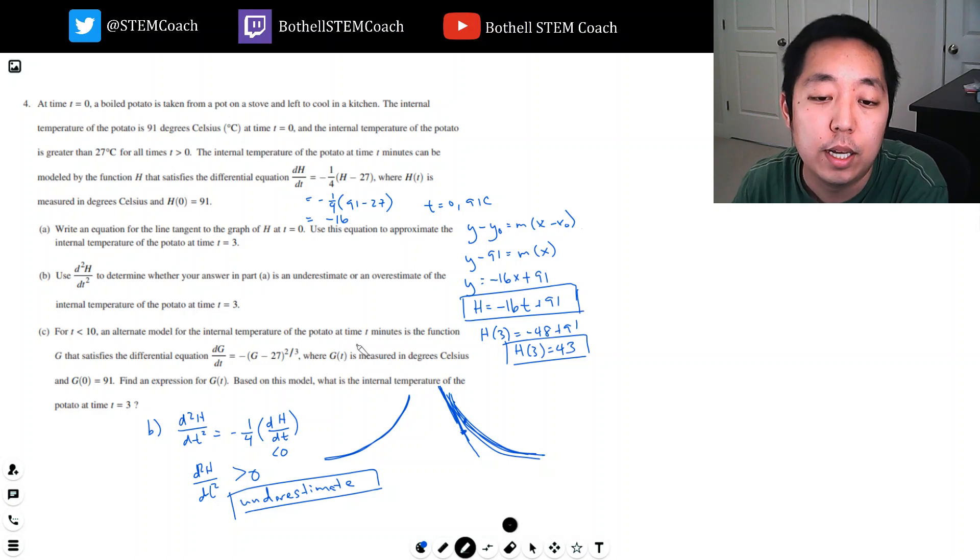Part C: For t less than zero, an alternative model for the internal temperature of the potato at time t minutes is the function g that satisfies the differential equation dg/dt equals negative (g minus 27)^(2/3), where g(t) is measured in degrees Celsius. Find an expression for g(t) based on this model.